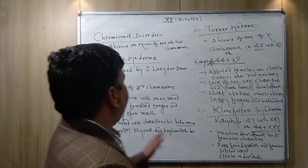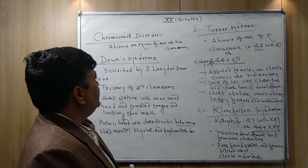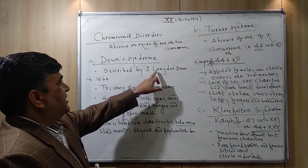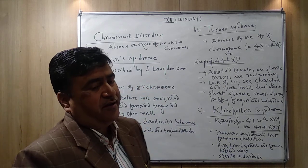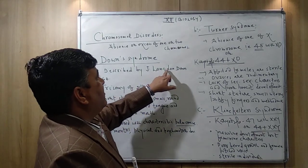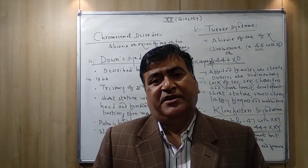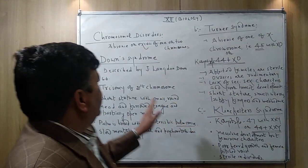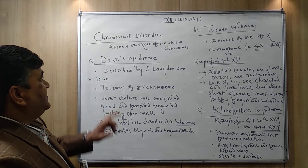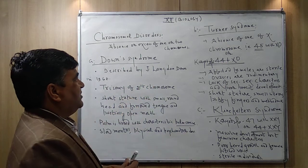The first disorder is Down syndrome. Down syndrome was described by a scientist named J. Langdon Down, and on his name the disease was called Down syndrome. He reported it in the year 1966. Down syndrome is caused by trisomy of the 21st chromosome.